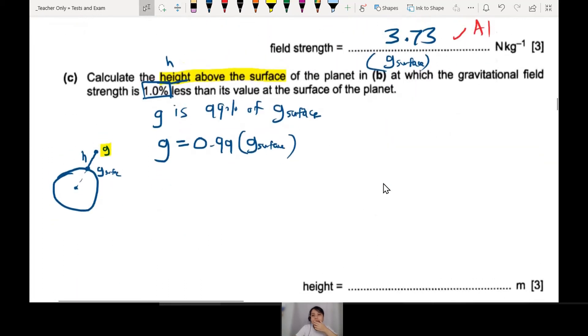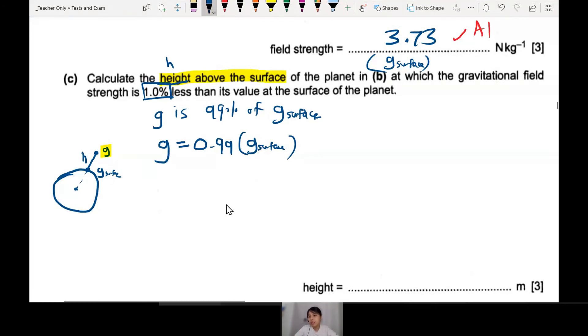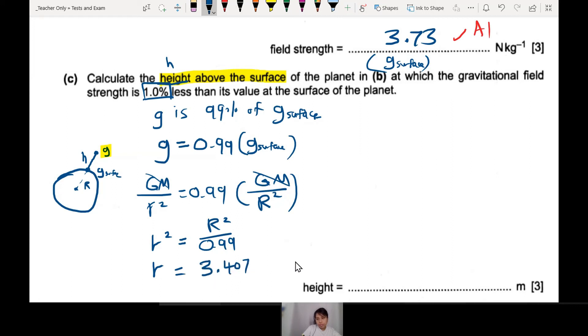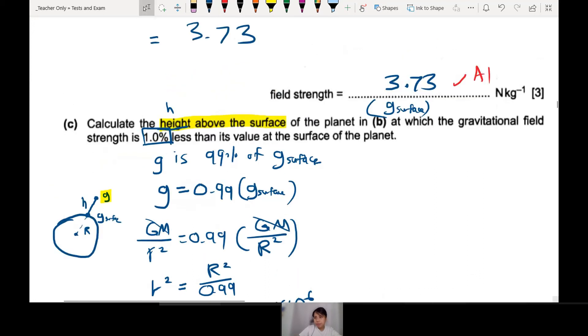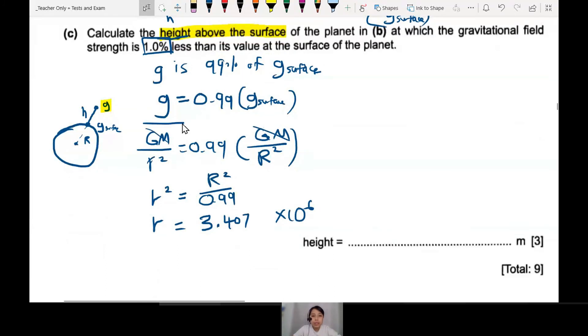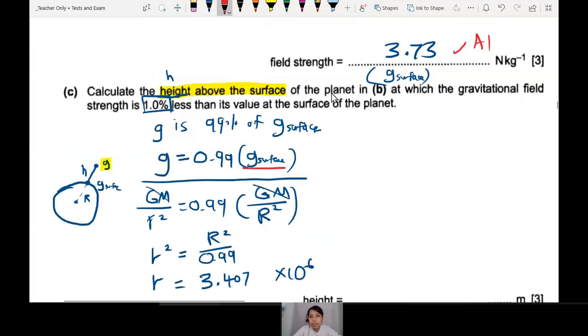This is g surface. Calculate, or if you did not get to solve that part and plug inside here, another method is to use the whole equation again. So if you do this, another method, the longer method: 0.99 times GM over r. GM, you divide both sides, all you have left is r squared goes to r squared over 0.99, and this will give you r = 3.407 times 10^6. This method is if you didn't know what is g surface from the previous part. This method just in case you're wrong up there - you're scared you're wrong, you do this again.